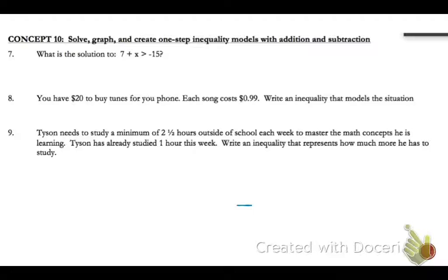So the first thing we're going to do to get x by itself, subtract 7 from both sides. So we'll have x is greater than negative 22.